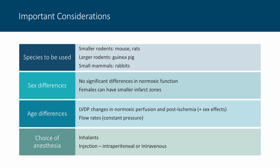We also need to consider sex differences. While there are no significant differences between male and female animals in normoxic functionality, females can have smaller infarct zones in ischemia-reperfusion injury setups. It's best practice to use only males or females and never a mixed-sex population. Age differences also matter — differences in left ventricular developed pressure are seen in normoxic perfusion and post-ischemia across age groups. Flow rates also change as animals become older, which has additional influence in a constant pressure setup.